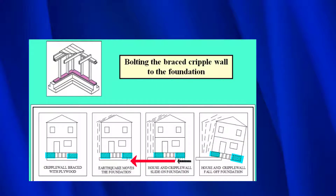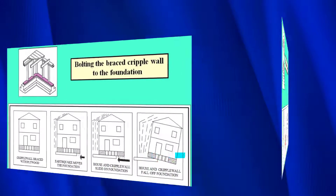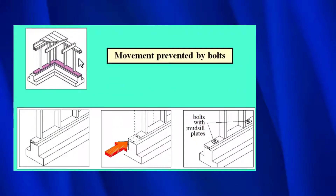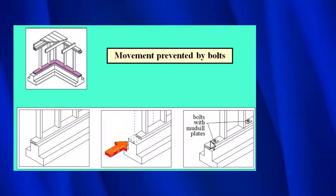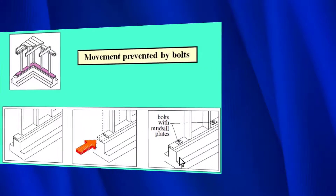Now that we have braced the cripple wall with plywood on each end, when the earthquake force moves underneath the house, the house will try to slide off the foundation and can fall off completely. The only way to fix that is to bolt the cripple wall to the foundation. Bolting the house to the foundation is one of the easiest parts of any seismic retrofit. The mud sill needs to be bolted directly to the foundation because that's the base of the cripple wall. All we need to do is put in some bolts connecting the mud sill to the foundation.